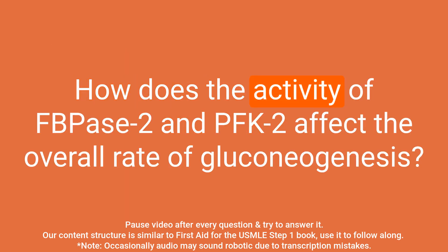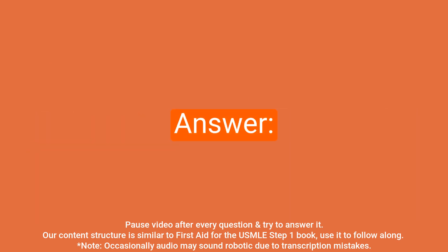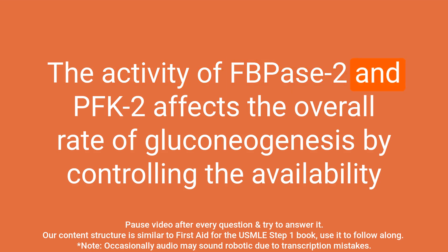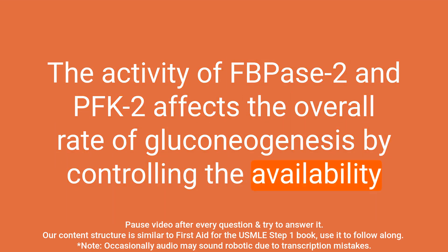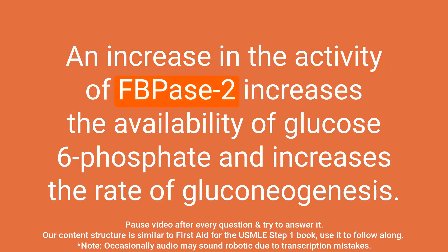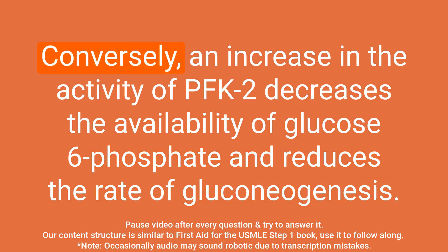Question: How does the activity of FB-PACE-2 and PFK-2 affect the overall rate of gluconeogenesis? Answer: Their activity affects gluconeogenesis by controlling the availability of glucose 6-phosphate, a substrate for glucose 6-phosphatase. An increase in FB-PACE-2 activity increases glucose 6-phosphate availability and increases gluconeogenesis. Conversely, an increase in PFK-2 activity decreases glucose 6-phosphate availability and reduces gluconeogenesis.